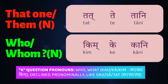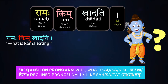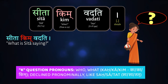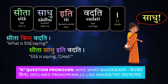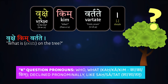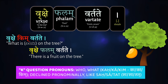In the neuter, the singular is going to be kim, meaning 'what' — that's different from what you might expect. The rest are like the tat forms. The accusatives are going to be the same. 'Rāmaḥ kim khādati' — what is Rāma eating? 'Rāmaḥ phalam khādati.' 'Sītā kim vadati' — what is Sītā saying? 'Sītā sādhu iti vadati' — Sītā is saying 'great.' In those examples, kim is in the second case, the accusative. 'Vṛkṣe kim vartate' — what's there on the tree? 'Vṛkṣe phalam asti' — there's fruit on the tree. Here kim is in the nominative.